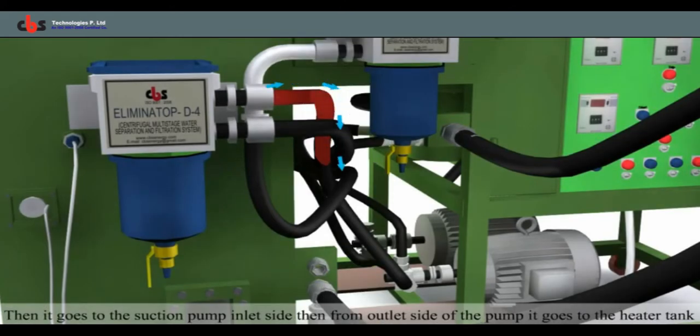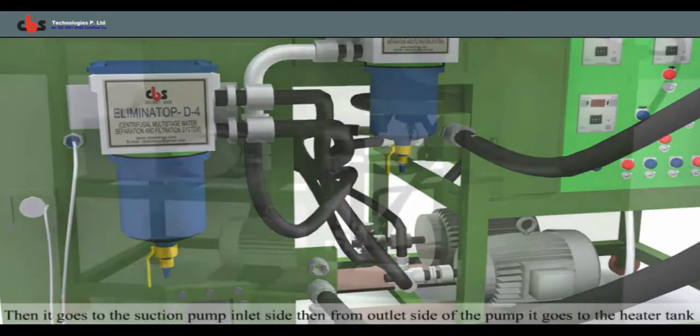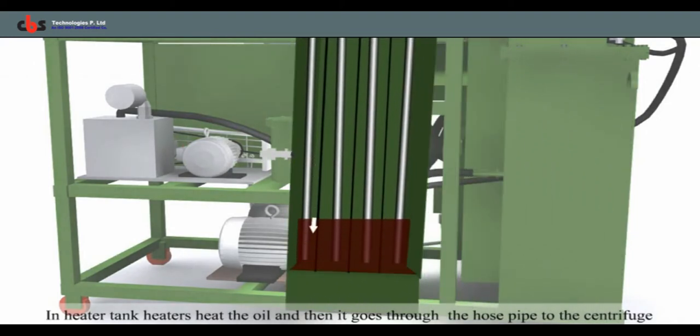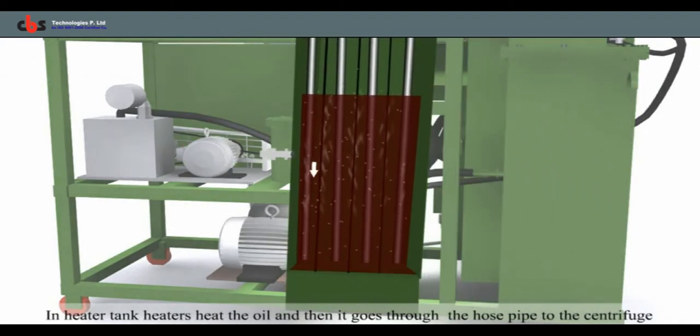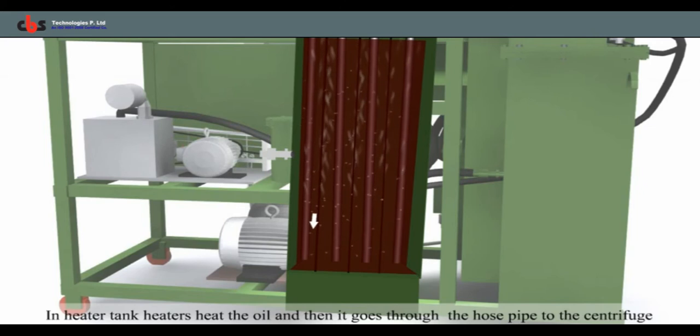Then it goes to the suction pump inlet that pumps the dirty oil into the heater chambers. In heater chamber, heaters heat the dirty oil, and then it goes to the centrifuge through the hose pipe.